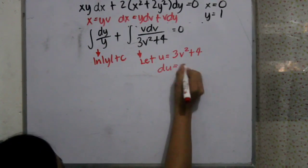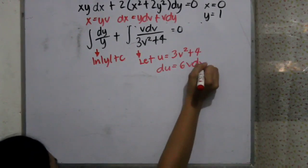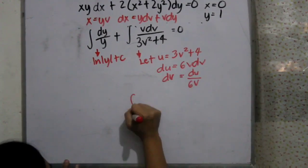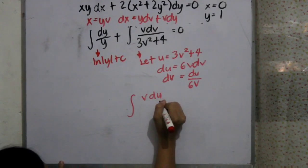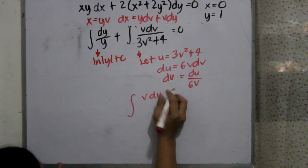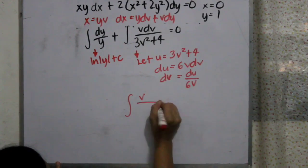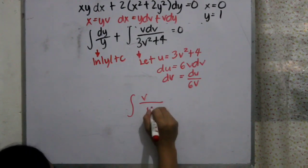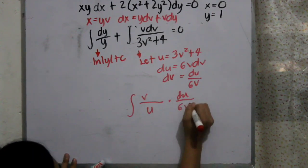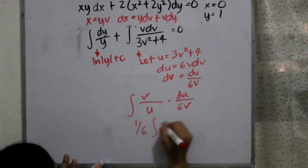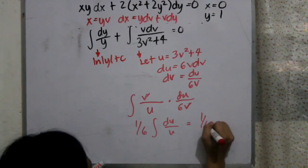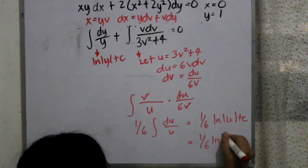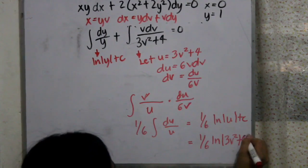In the second part, we let u equal 3v² plus 4. Differentiating it, we obtain du equals 6v·dv. To substitute dv, we manipulate to get dv equals du over 6v. Substituting, we have v over (3v² + 4) multiplied by du over 6v. The v cancels, leaving us with (1/6) times the integral of du over u. We know the integral of that is ln u plus c, so substituting back, we get (1/6)·ln(3v² + 4) plus c.